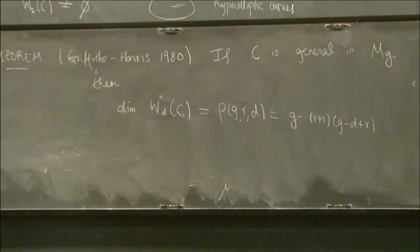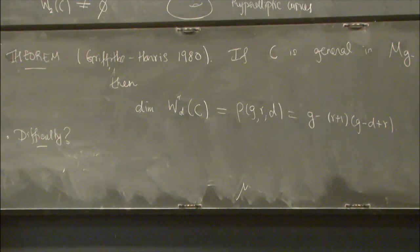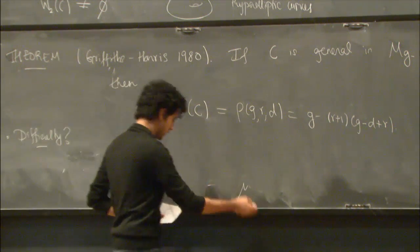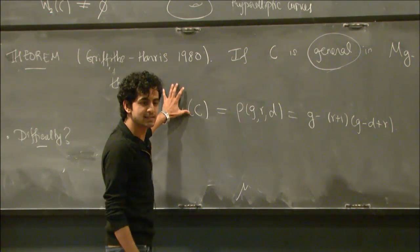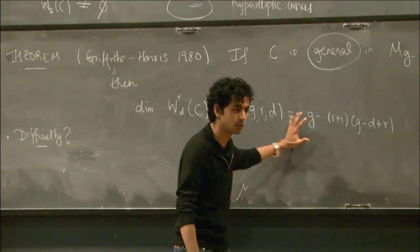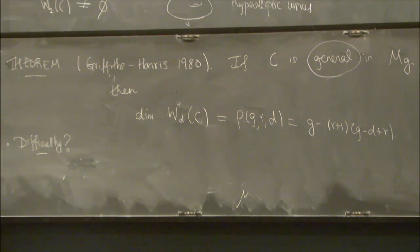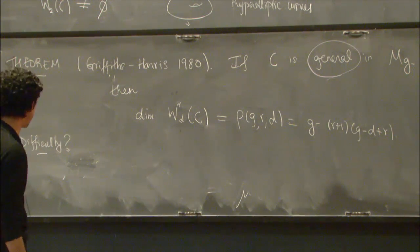So this is the statement for the general curve. You should ask yourself, what is the difficulty here? This fact was believed in the 19th century, but the proof didn't appear until 1980. So what was the difficulty? Well, the difficulty is basically in this word, general. For standard reasons, WRD of C, or the set of curves for which WRD of C equals this number, is a Zariski open set. So if it's non-empty, it's going to be dense. So the difficult part is producing one curve. And producing one curve is very hard. I'll steal a line from my advisor: you're looking for hay in a haystack, and all you're finding is needles. There is a dense open set of these, but we can't find any.